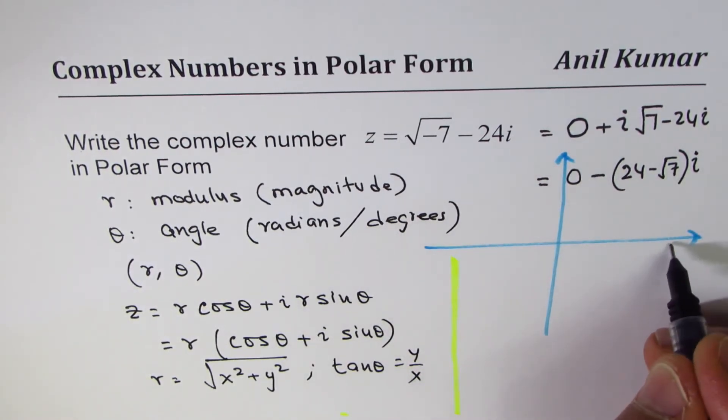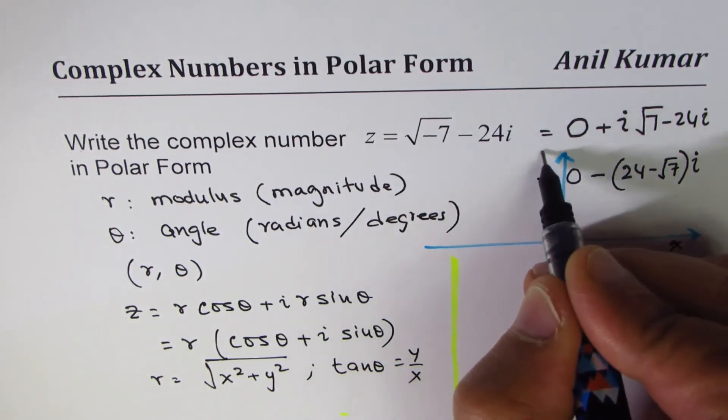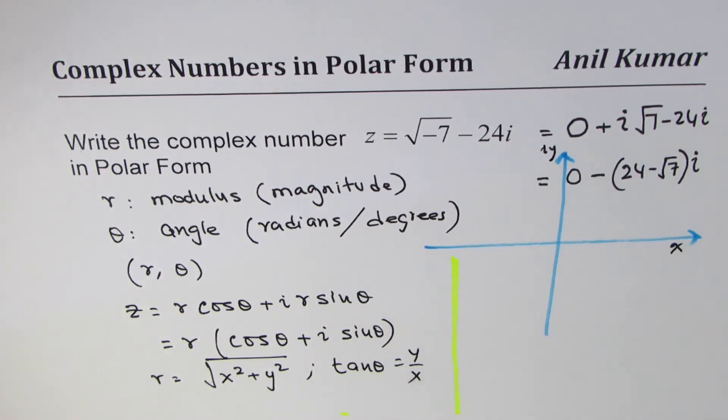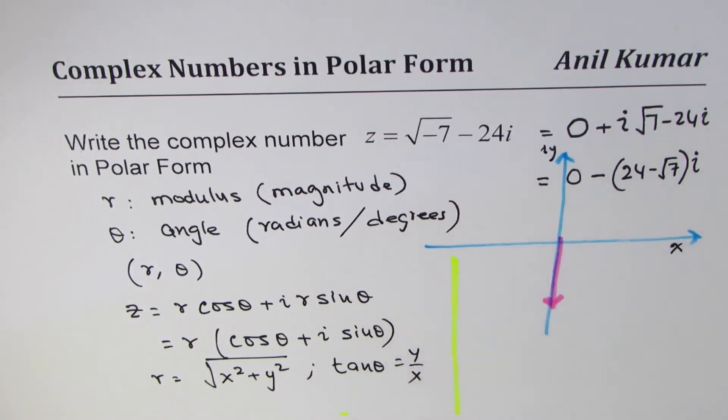If you want to represent it on the polar plane, this is the real part, let's say x-axis, and this is y-axis. The negative part will be coming in this direction, so I could represent this as this vector.